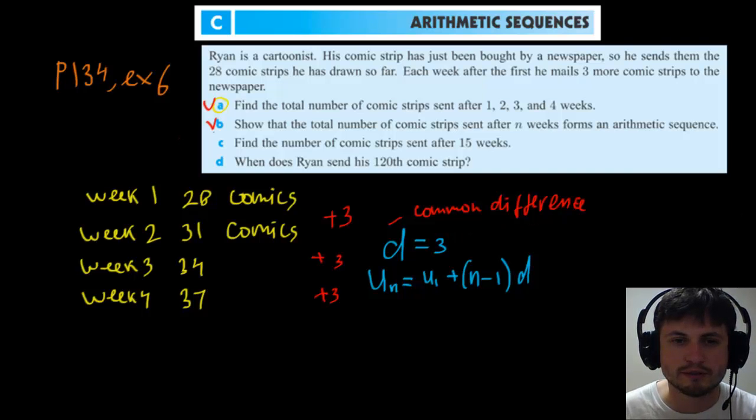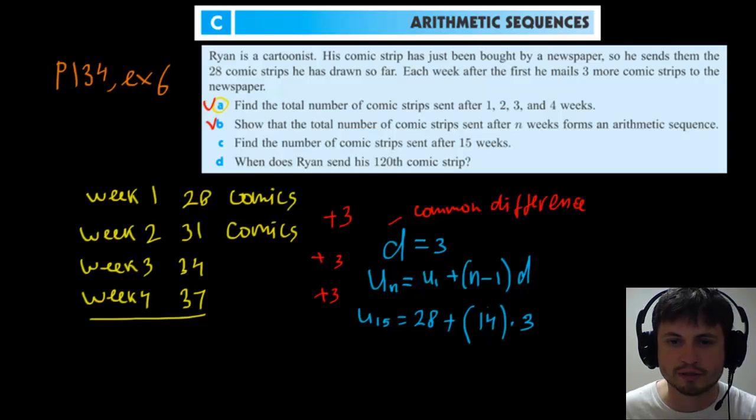And that's it for letter B. Letter C, find the number of comic strips sent after 15 weeks. Now, obviously you can do it this way by continuing this, or you can do it the smart way by just doing the formula. So for u15, you will have u1, which is 28, plus n minus 1, which is 14, times 3. And so now you just have to calculate this and this will be 28 plus 42, which will equal to 70. So that's 70 comic strips.